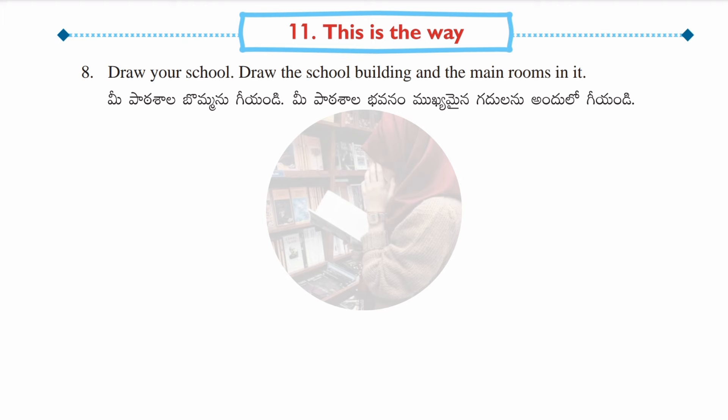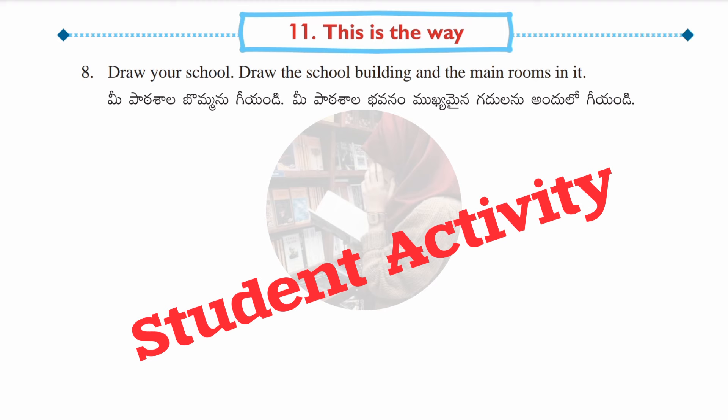Eighth question: draw your school building and the main rooms in it — headmaster room, staff room, library, playground, etc. Draw it carefully and color it with any color you wish, since no specific colors are mentioned for this activity.